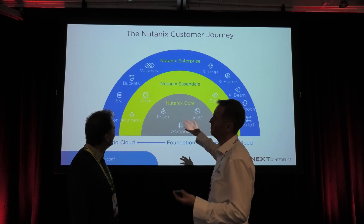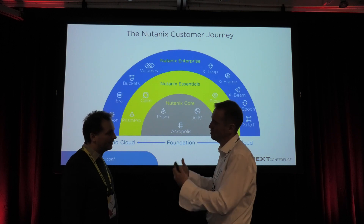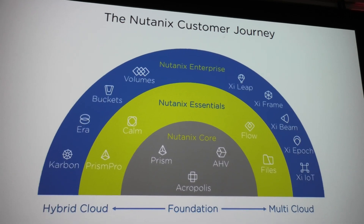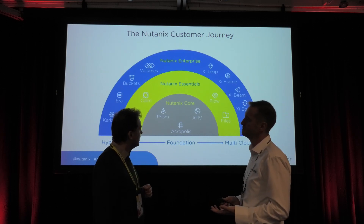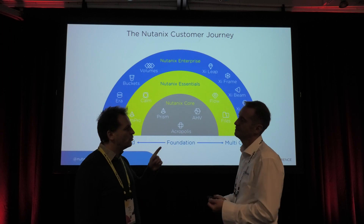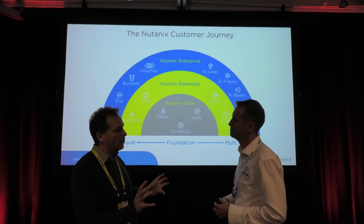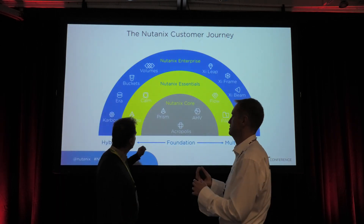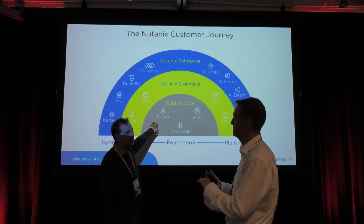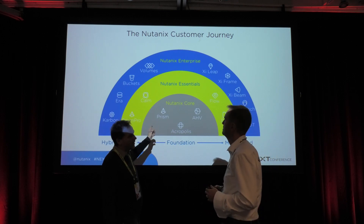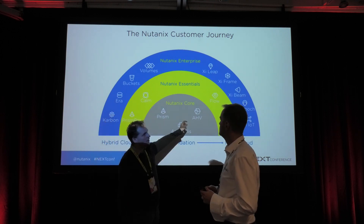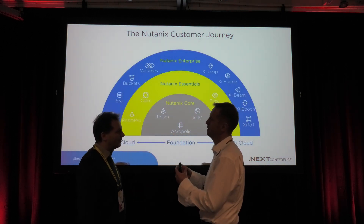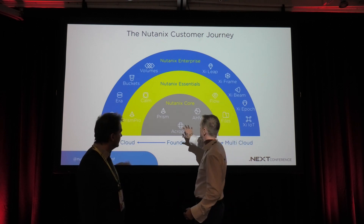Calm is our DevOps platform — you can build your blueprints and applications, simple or complex, and run them on any cloud. Flow is the micro-segmentation security solution using the file service. Everything built in Nutanix must be robust, scalable, and resilient — high availability by definition. Prism is the interface for controlling everything. AHV is our enterprise-ready hypervisor. AOS is the storage part of the hyperconvergence — that's where we started 10 years ago, and we're still growing.